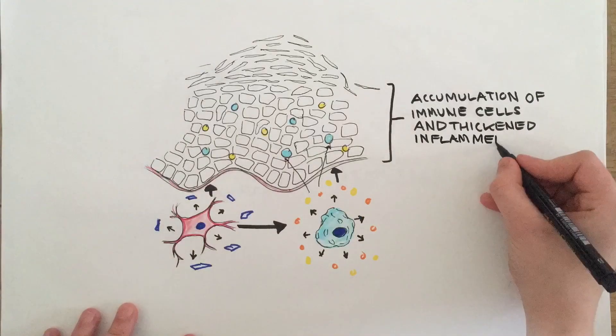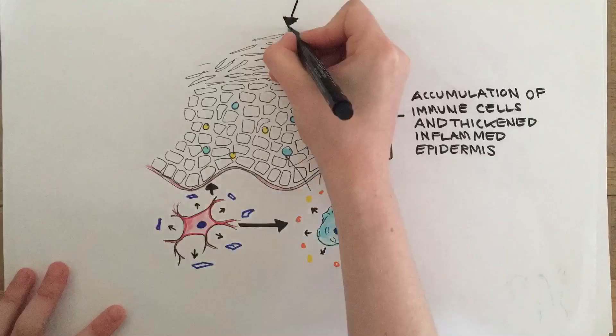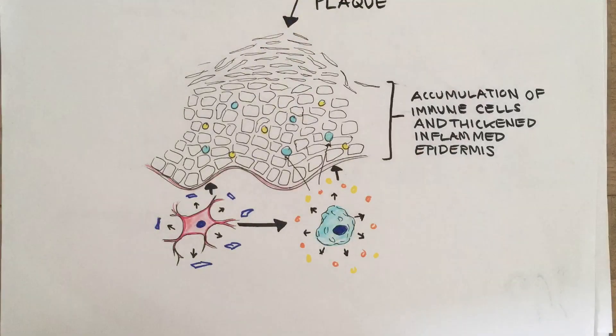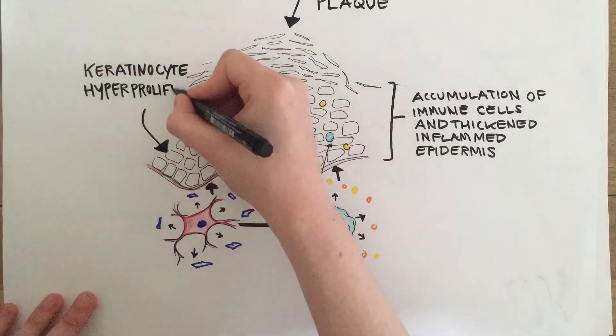The keratinocyte hyperproliferation leads to the formation of psoriatic plaques.